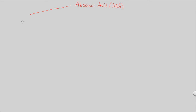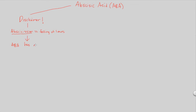Before I begin, there's a huge disclaimer we need to establish so it doesn't trick us. The term 'abscission' in plant study refers to the falling of leaves — that is its definition. But ABA, abscisic acid, is a misnomer: it has absolutely nothing to do with abscission. ABA is not involved in the falling of leaves. Even though it has a similar name, make sure that's very clear — nothing to do with abscission.